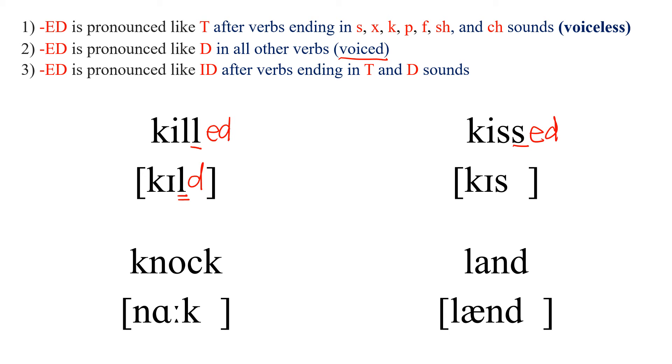Next one: KISS. This ends in a consonant, so we add ED to make it past. The S ending is one of the voiceless sounds, so we add T and read: KISSED.